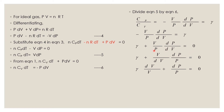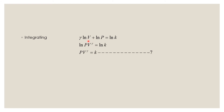Rearranging the terms and multiplying throughout by dV over V, we get gamma times dV over V plus dp over p is equal to zero. Integrating, we get gamma·ln V plus ln p is equal to ln k, where k is a constant. Using the rules of logarithm, this can be written as ln of p·V raised to gamma equals ln k, which gives pV raised to gamma is equal to k — equation 7.